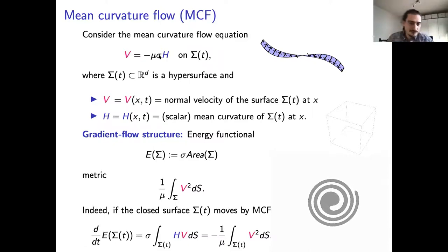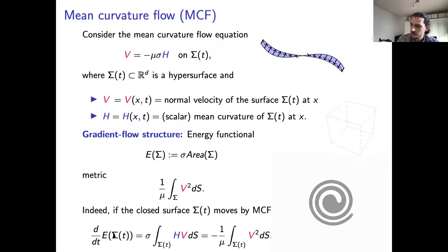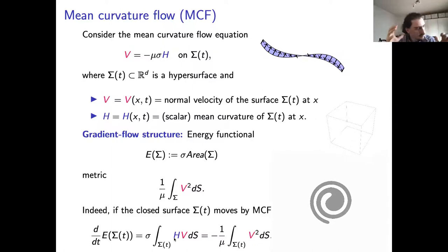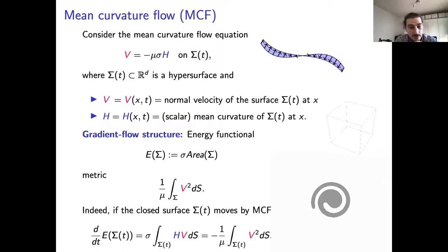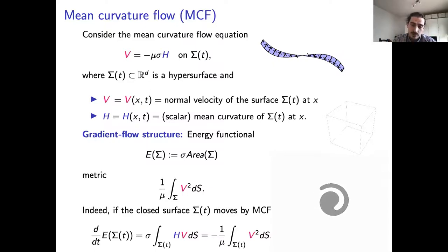You can see the gradient flow structure from this computation — also done by Harald this morning. You compute the change of the surface area: no matter what evolution you have, it's always mean curvature times velocity. Plugging in the equation, this is less than or equal to zero — it's minus a square — and the velocity points in the direction of steepest descent. We want to use this for our weak solution concept.